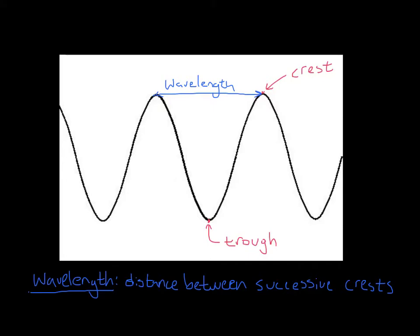The symbol for wavelength is that guy right there, the gamma — it looks like a sad upside-down Y. The units of wavelength are nanometers, which are the small ones, or meters. I'll show you how to transfer between those two later on.